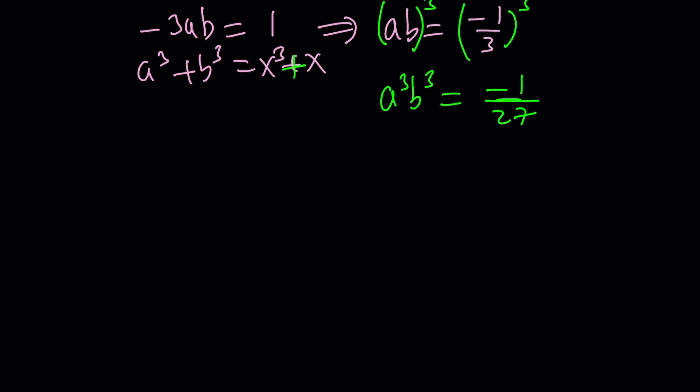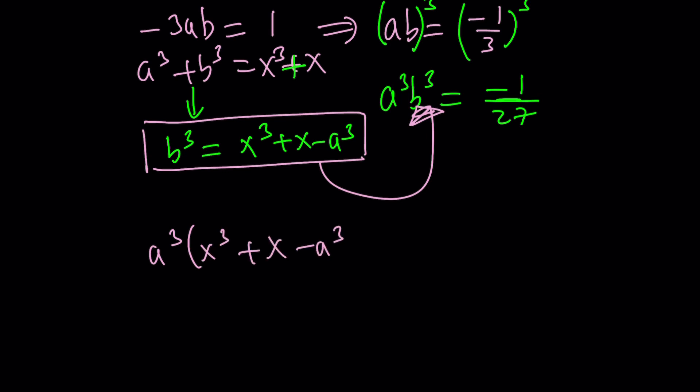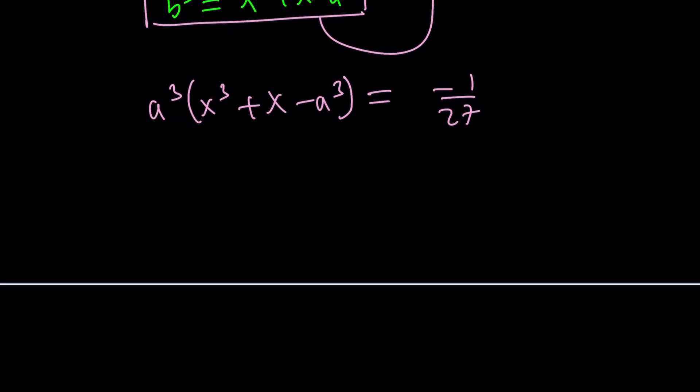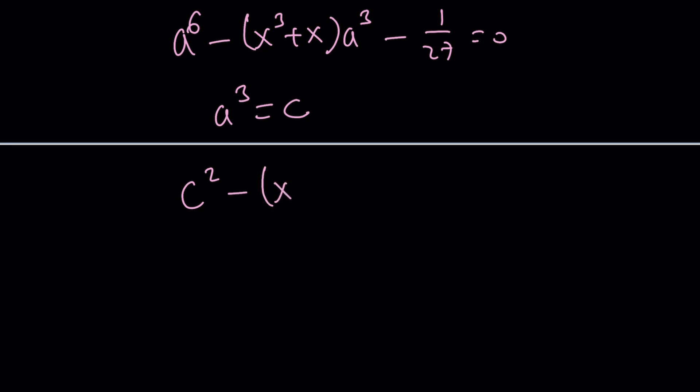And then the next thing you could do is isolate b cubed: x cubed plus x minus a cubed. And then go ahead and replace b cubed with this. And when you do that, you're going to get something like this. So now if you distribute and put everything on the right hand side, you're going to get a to the sixth minus (x cubed plus x) a cubed minus 1 over 27 equals 0.